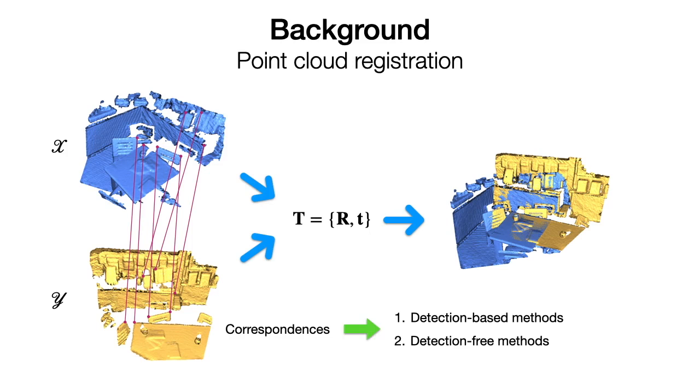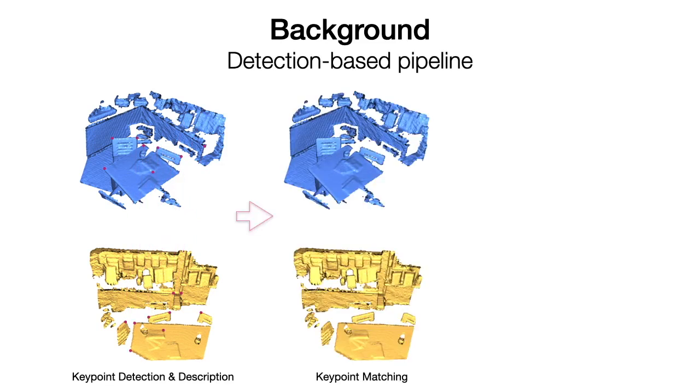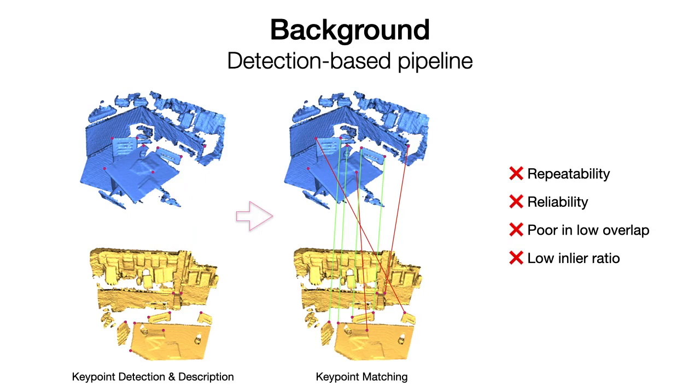Current correspondence extraction methods can be classified into two categories. The first class relies on keypoint detection and matching. However, keypoint detection suffers from repeatability and reliability problems, especially in low overlap scenes, so the inlier ratio is unsatisfactory.